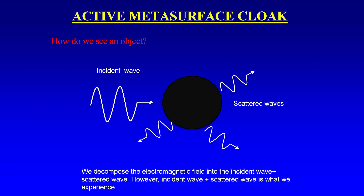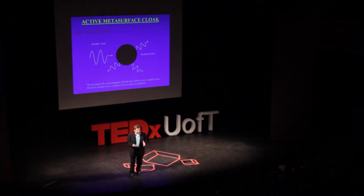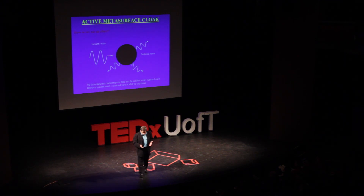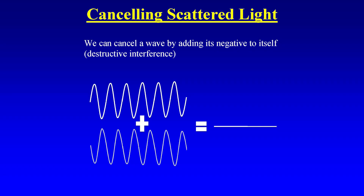How do we see an object? When light impinges on an object, it scatters — reflects from the object — all over the space, and some of the scattered light reaches our eyes. If we have a way to cancel out the scattered fields, then only the ambient light will remain and the object will look invisible. This can be achieved through a phenomenon called destructive interference: when you take two waves that are the negative of each other and add them, they cancel.